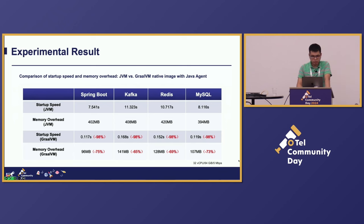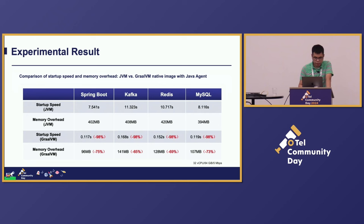We also did some experimental results. As you can see in the table, we tested on different frameworks such as Spring Boot, Kafka, Redis, and Micronaut with the Java agent in GraalVM. We can see the startup speed and memory overhead improved significantly, and we also collected trace and metrics data completely.